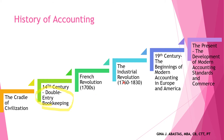Then, the Industrial Revolution, from 1760 to 1830. Mass production and the great importance of fixed assets were given attention during this period. Then, in the 19th century came the beginnings of modern accounting in Europe and America.